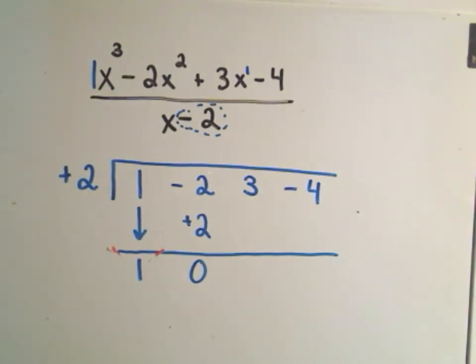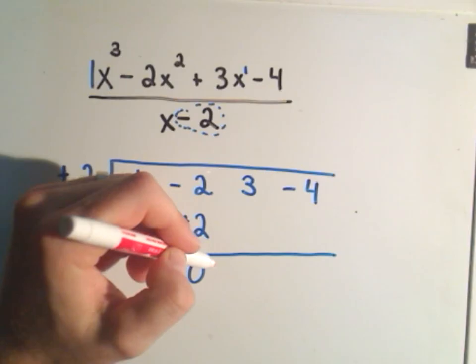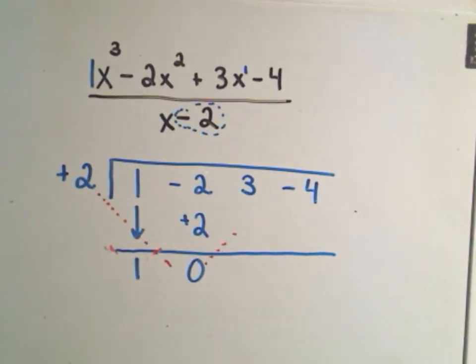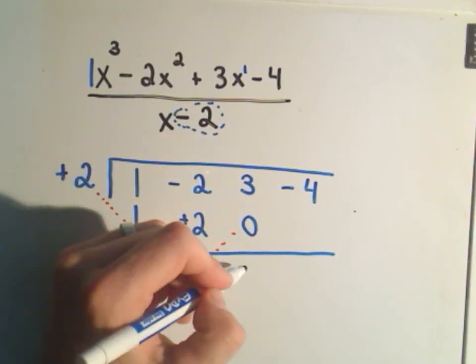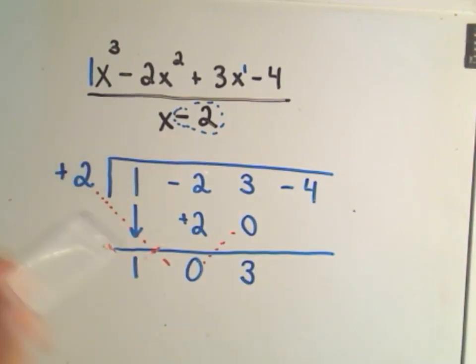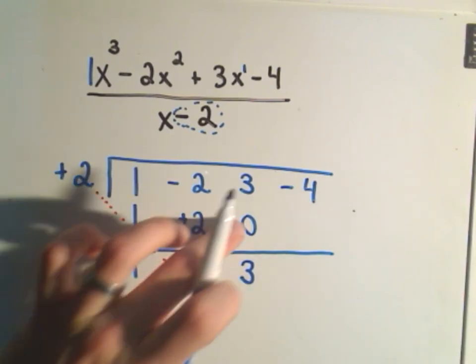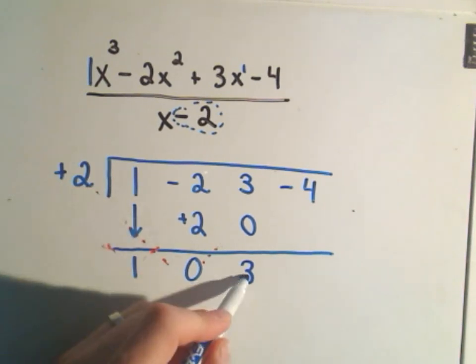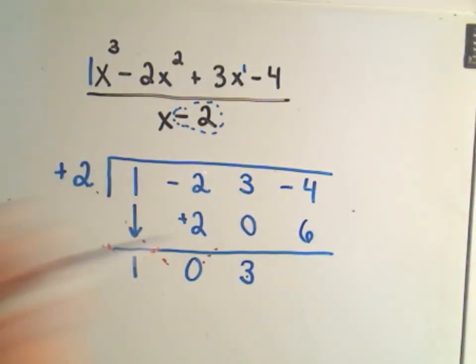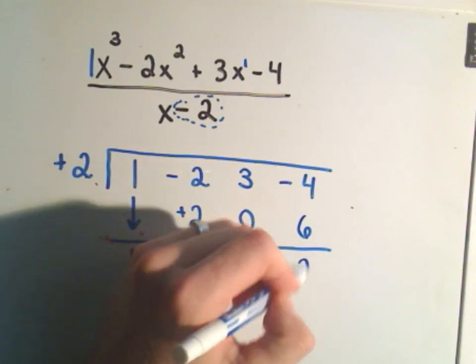And then we repeat this process. Now we take positive 2, multiply it by 0, and that's what we stick in the next column. So positive 2 times 0 is just going to give us 0. If we add those together we'll get positive 3. And then again I take positive 2 times positive 3. We'll take positive 2 times positive 3, that'll give me positive 6. We add the columns together and we get the number 2.